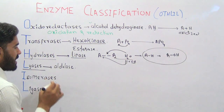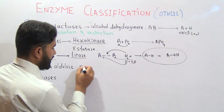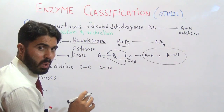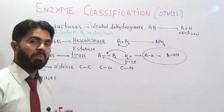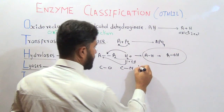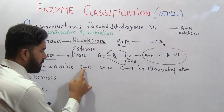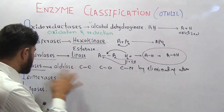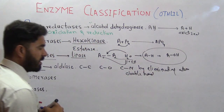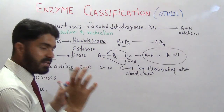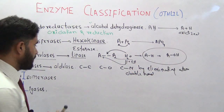Lyases are those enzymes which break bonds — C–C, C–O, or C–N bonds — but this time not with the help of water, but by eliminating an atom. As a result of this reaction, a double bond is usually formed. The enzyme involved in the breakdown of these bonds by eliminating an atom is called a lyase. One of the most famous examples is aldolase.